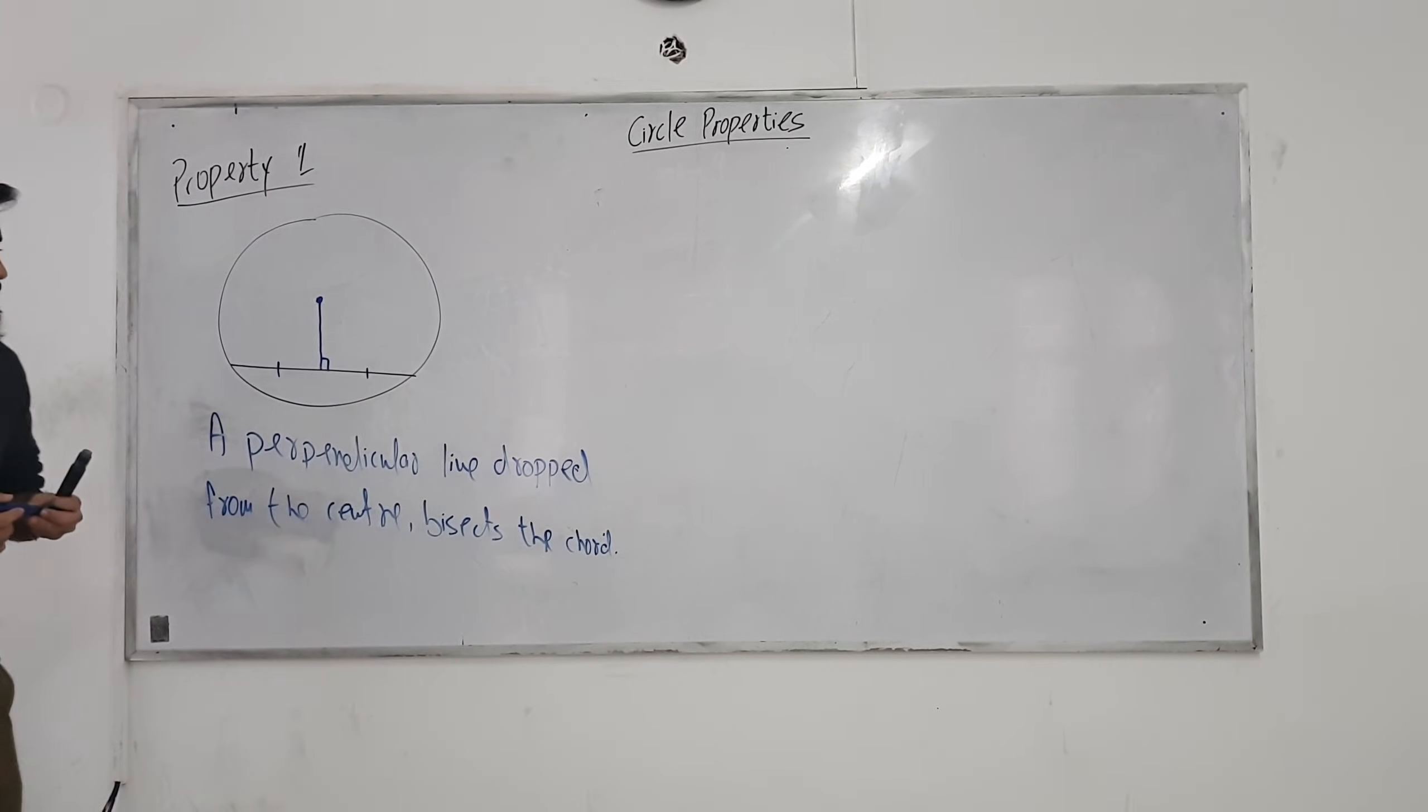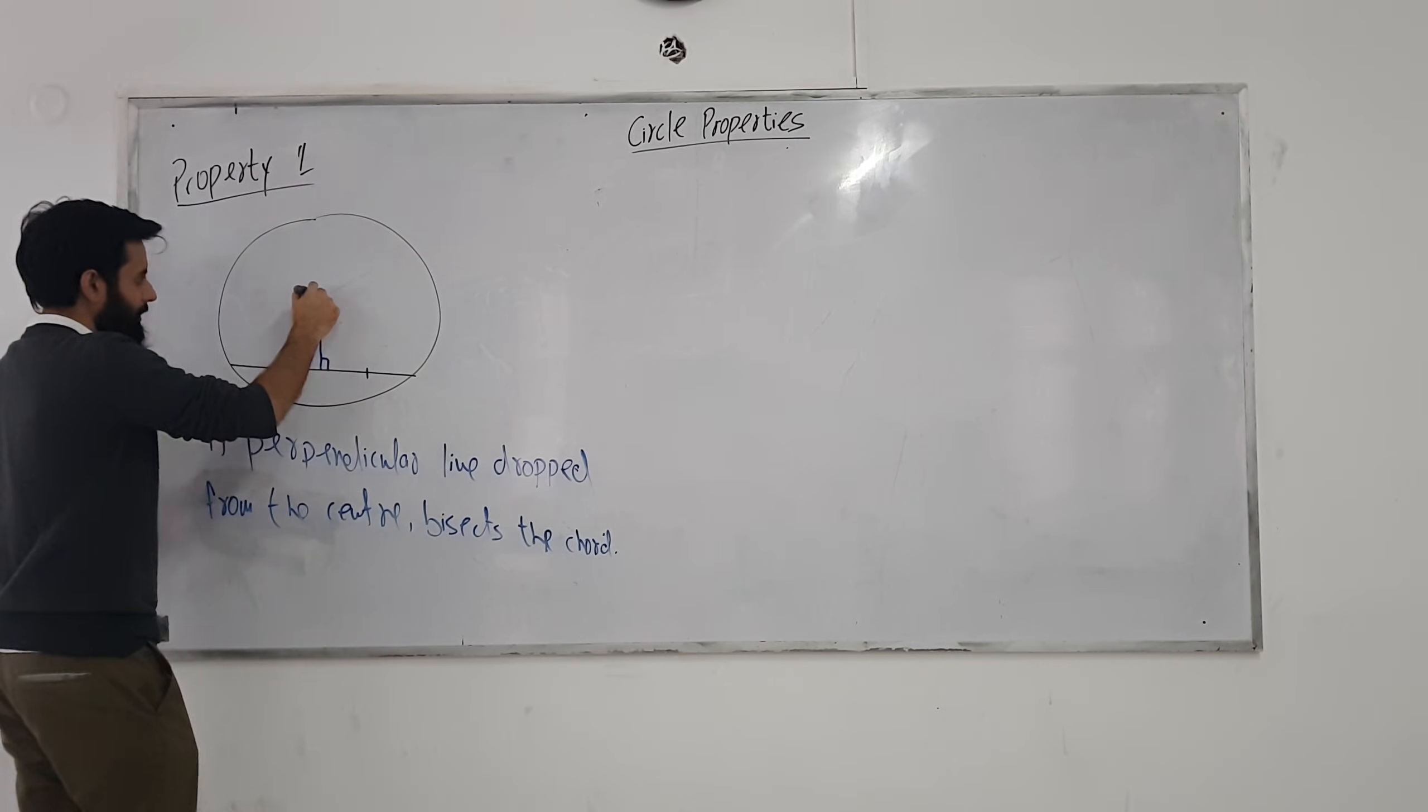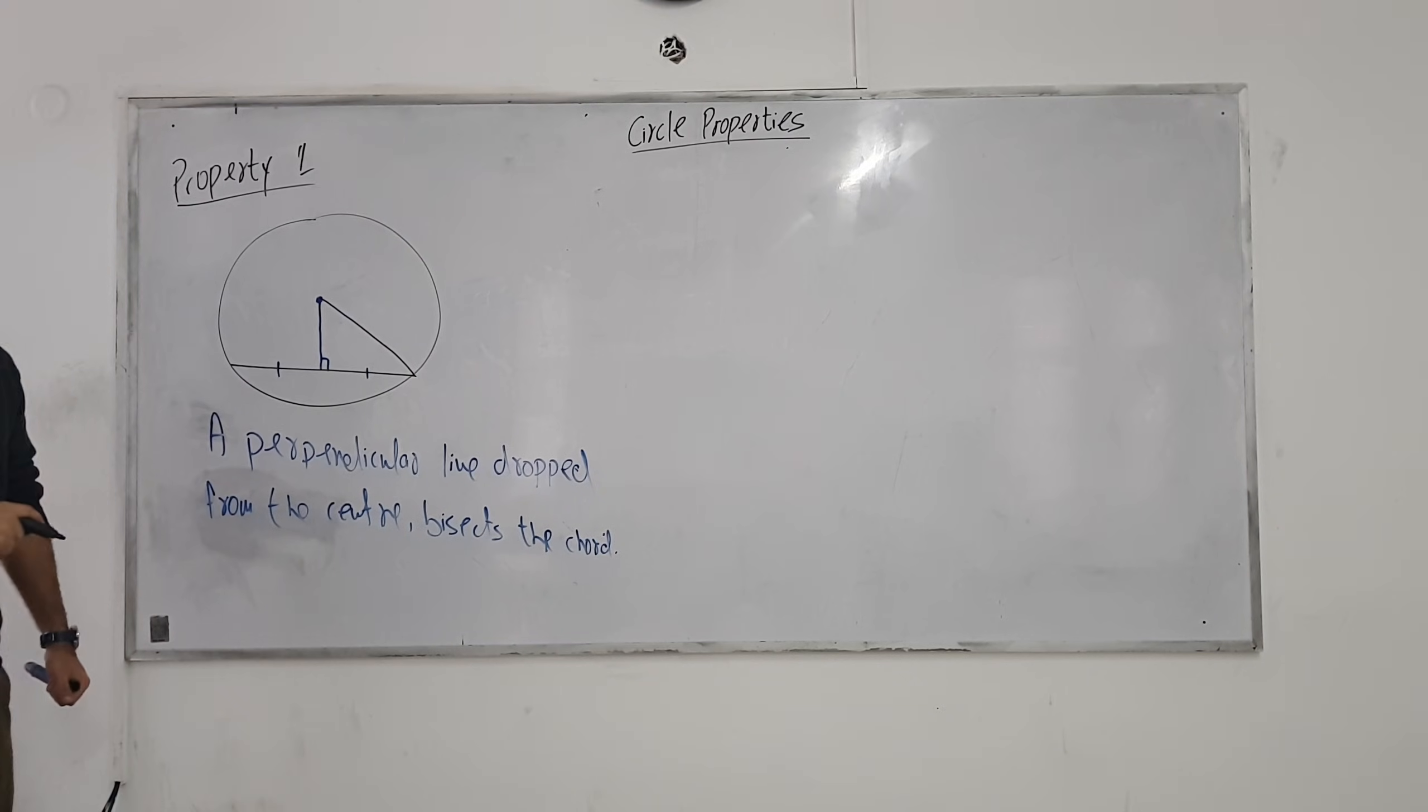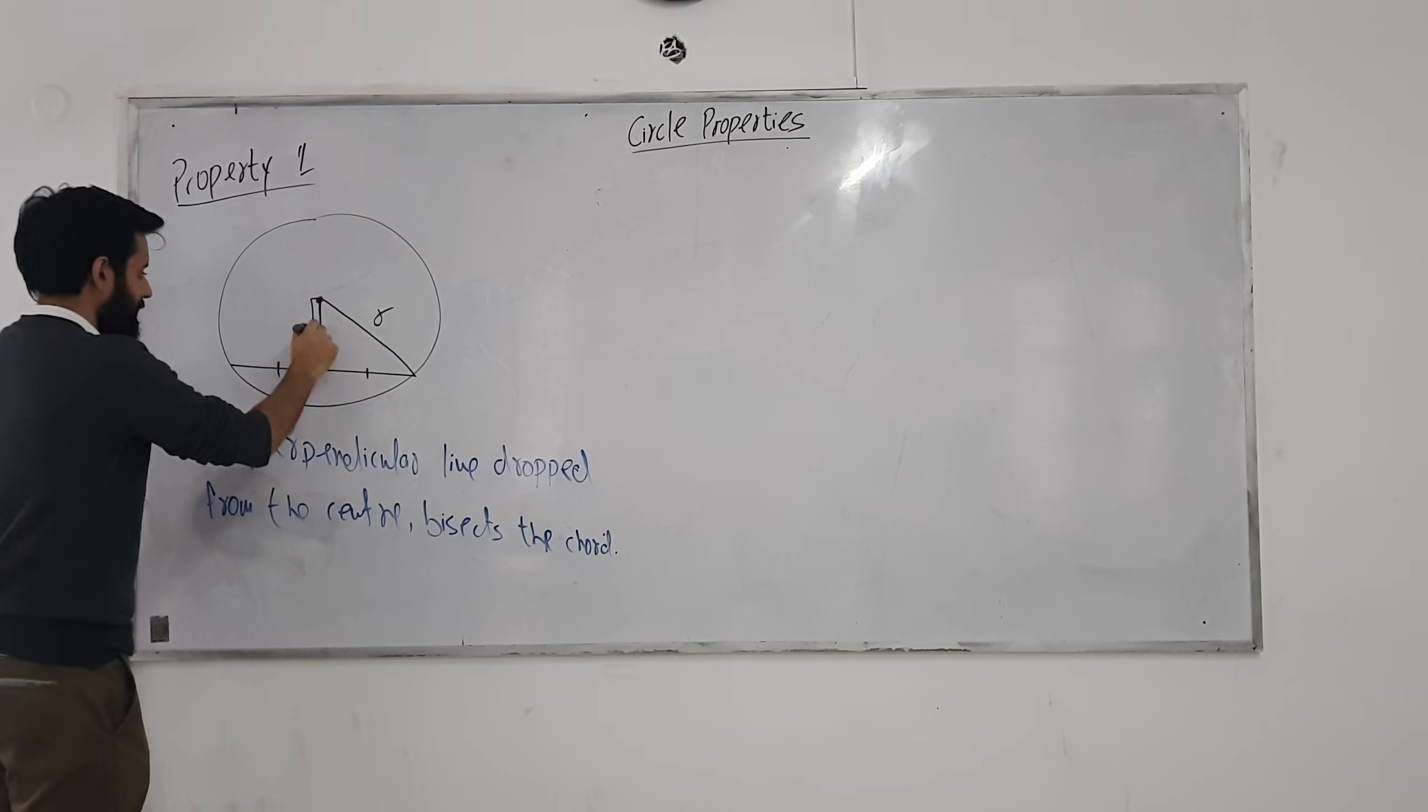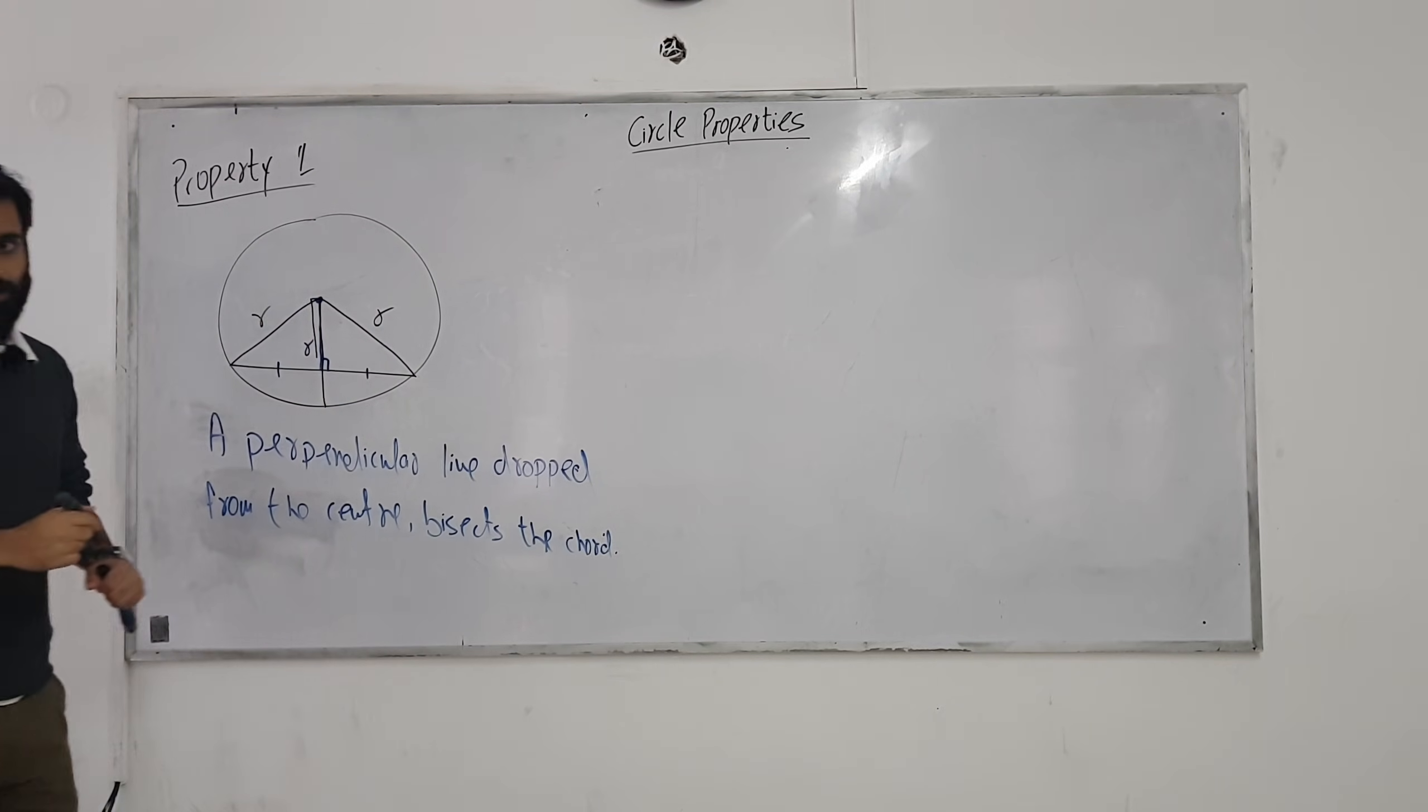Any questions? By the way, I'm making this line, what is it? It's the radius of the circle, right? How about this line? If I extend this line, what will it be? This will also be the radius. And what will it be? This will also be the radius.